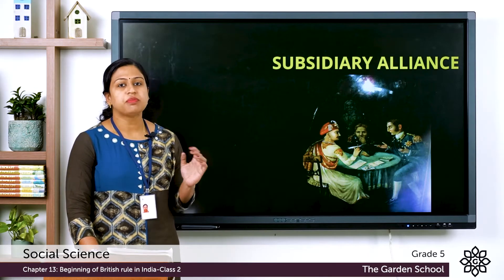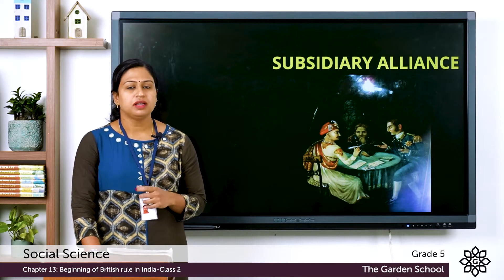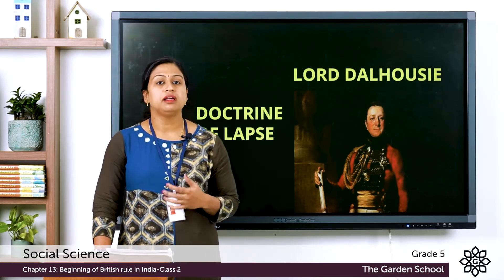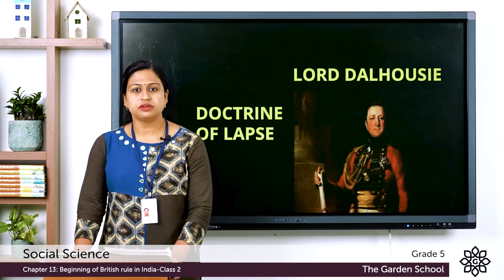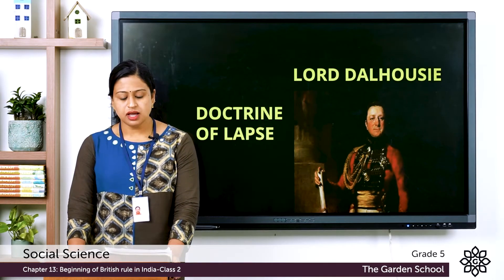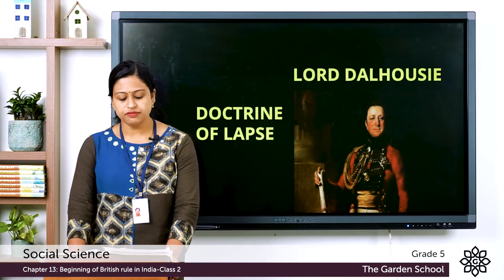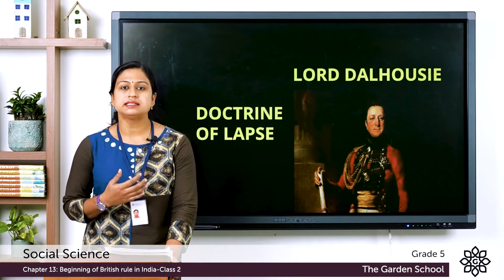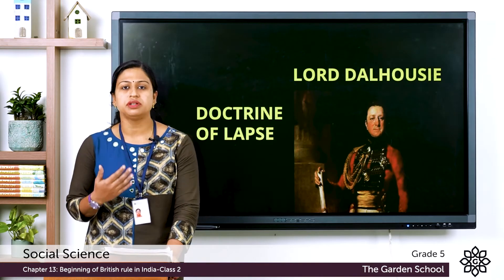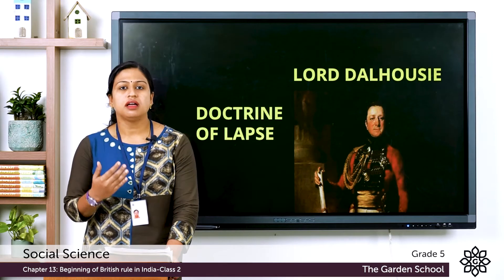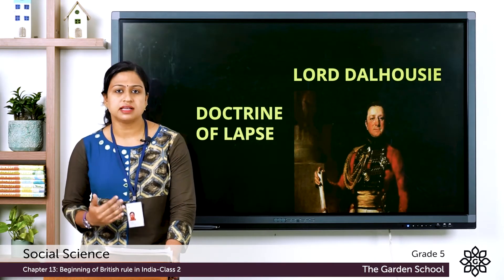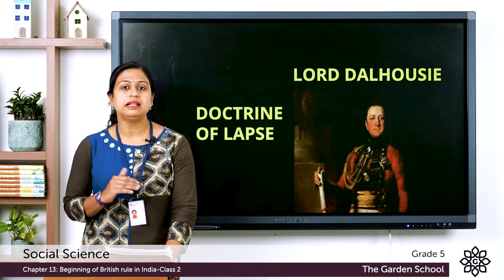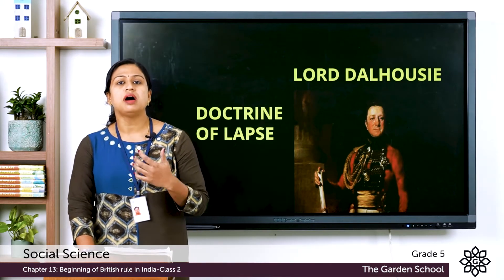By introducing the Subsidiary Alliance, the British strengthened their position in India. The next policy was the Doctrine of Lapse, introduced by Lord Dalhousie, who was the Governor General of India between 1848 to 1856. According to this policy, any Indian kingdom already under the Subsidiary Alliance had to give up its territory to the British if the king did not have any natural male heir or male successor — that is, after the death of the king, if there was no legal male heir, that territory would come under British rule.